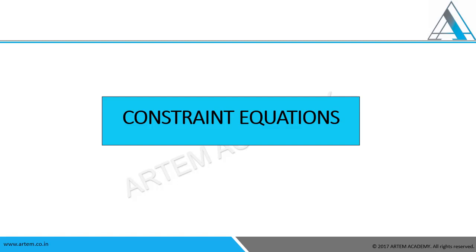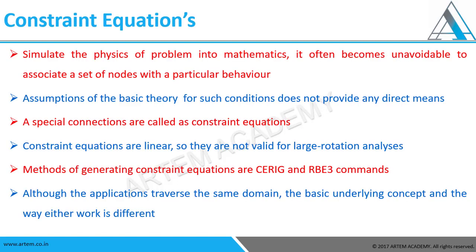This is part two. In this video on constraint equations, we are going to discuss two other types which are very important and most commonly applicable - that is RBE3 and CE-rigid. Just to summarize the previous video: why do we use constraint equations? To simulate physics into a mathematical problem and also to simplify the models to reduce simulation time. It often becomes unavoidable to associate a set of nodes with a particular behavior, and for this, constraint equations play a vital role.